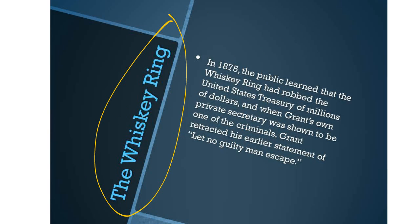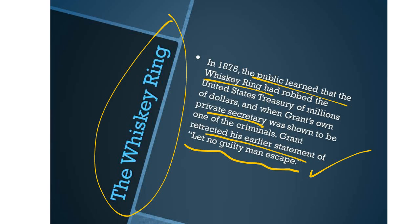The Whiskey Ring was another incident of corruption in the Grant administration. In 1875, the public learned that the Whiskey Ring had robbed the United States Treasury of millions of dollars. When Grant's own private secretary was shown to be one of the criminals, Grant, who had been very stern about punishing these criminals, retracted his earlier statement and said 'let no guilty man escape,' so he did not follow through on the punishment he had originally promised.